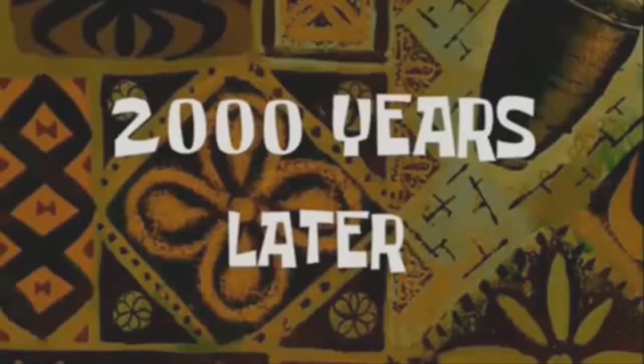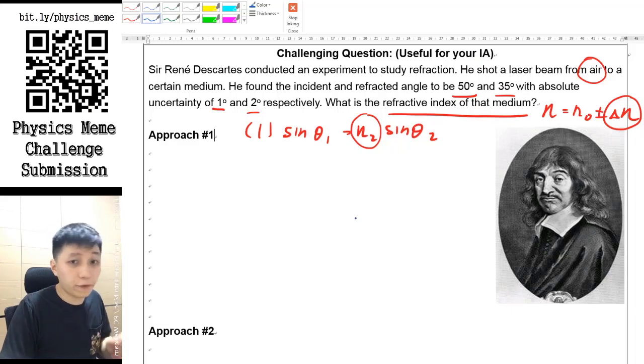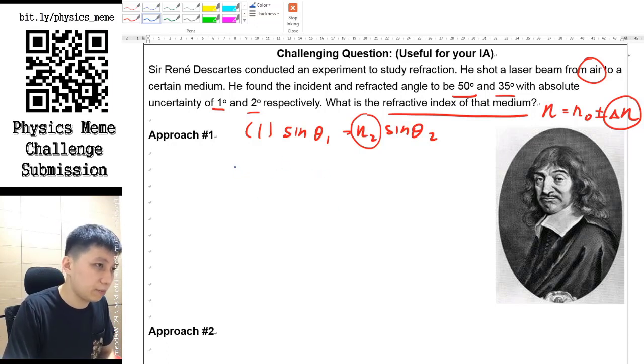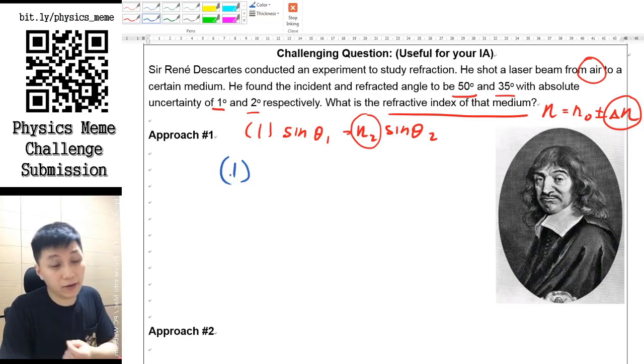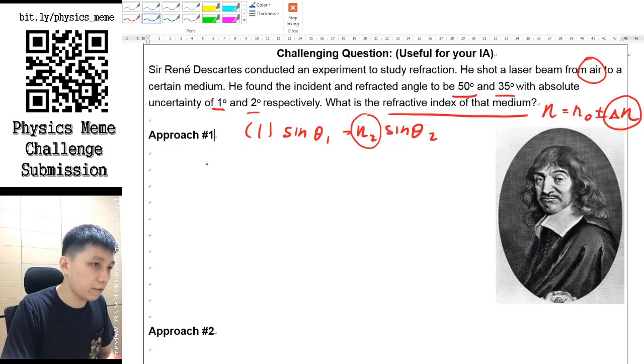Okay, so the first approach is the most intuitive one, or I'll call it the intuitive approach. What you can do is simply try to find out the maximum and minimum value of n by substituting the number into it. First of all, let's rearrange the refractive index so that should be n = sin θ₁ / sin θ₂.